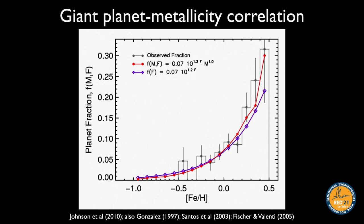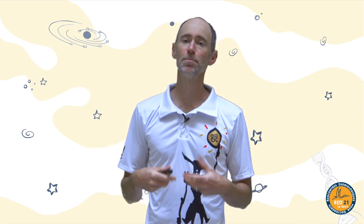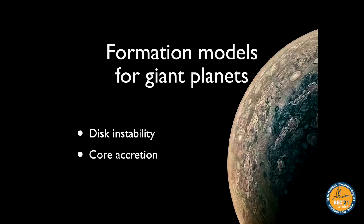Another key constraint is the giant planet metallicity correlation, one of the first correlations found for exoplanets. The x-axis is stellar metallicity calibrated to iron, and the fraction of stars with giant planets increases strongly with metallicity. Having more metals — perhaps providing more material to build planetesimals — helps form giant planets.